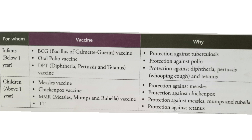Vaccines are given to children between the ages of six weeks and ten years against common infections such as diphtheria, whooping cough, tetanus, polio, measles, mumps, rubella, chickenpox, meningitis, etc. Some of these vaccinations have to be repeated after a few years because they will not provide lifelong immunity. The vaccine dose which is repeated after a few years is called a booster dose.